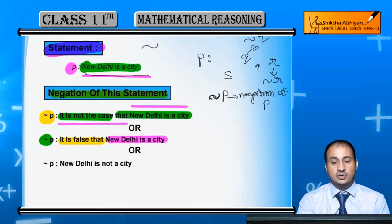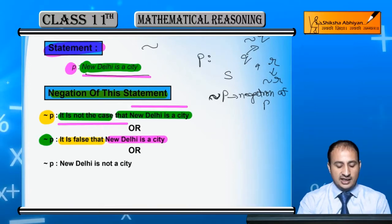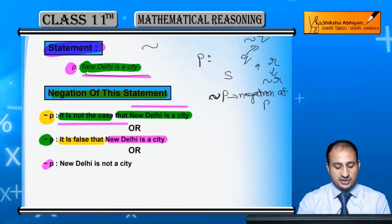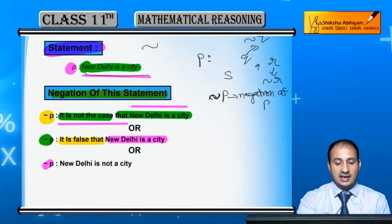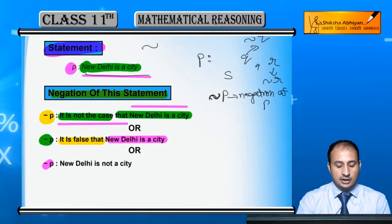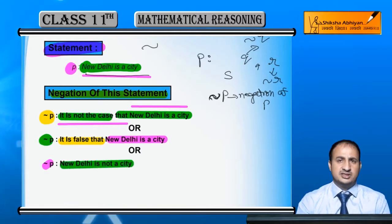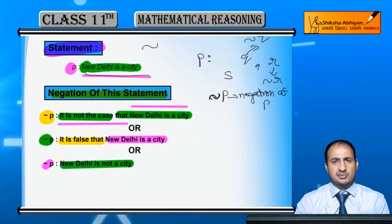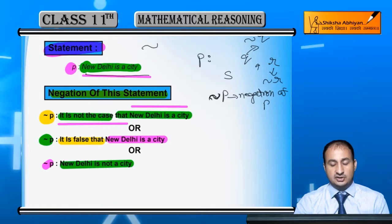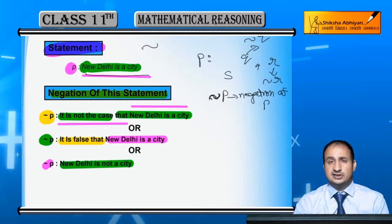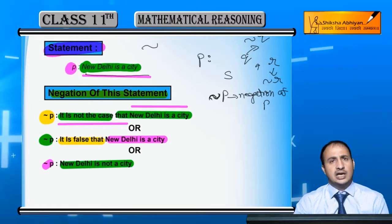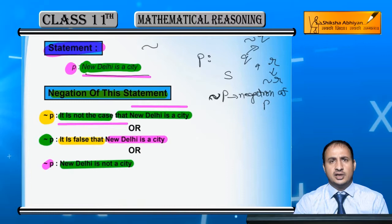Negation of P ko is tarah bhi likh sakte hain ki 'New Delhi is not a city.' Sabse simple method hai - sabse simple tarike se aap likh sakte hain ki 'New Delhi is not a city.' Simply 'not' laga dijiye, deny ho gaya.